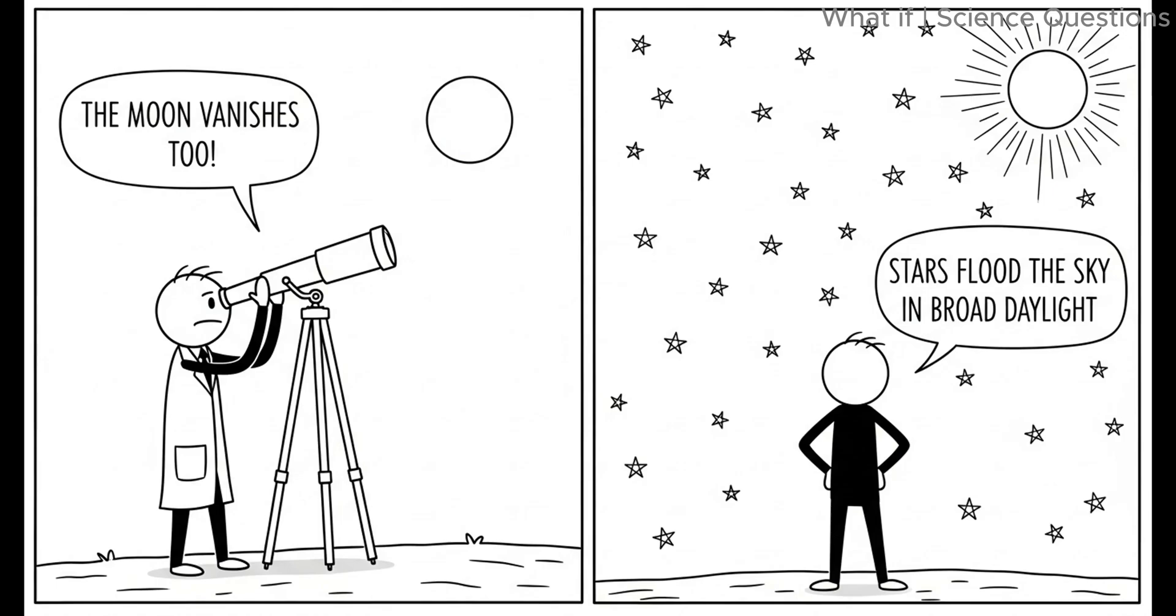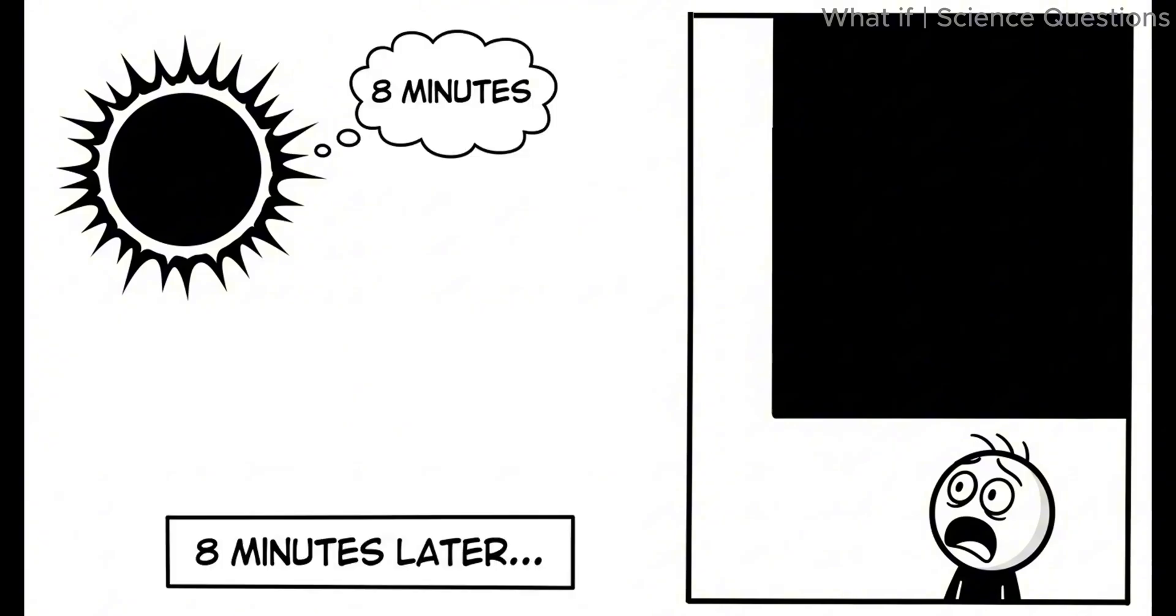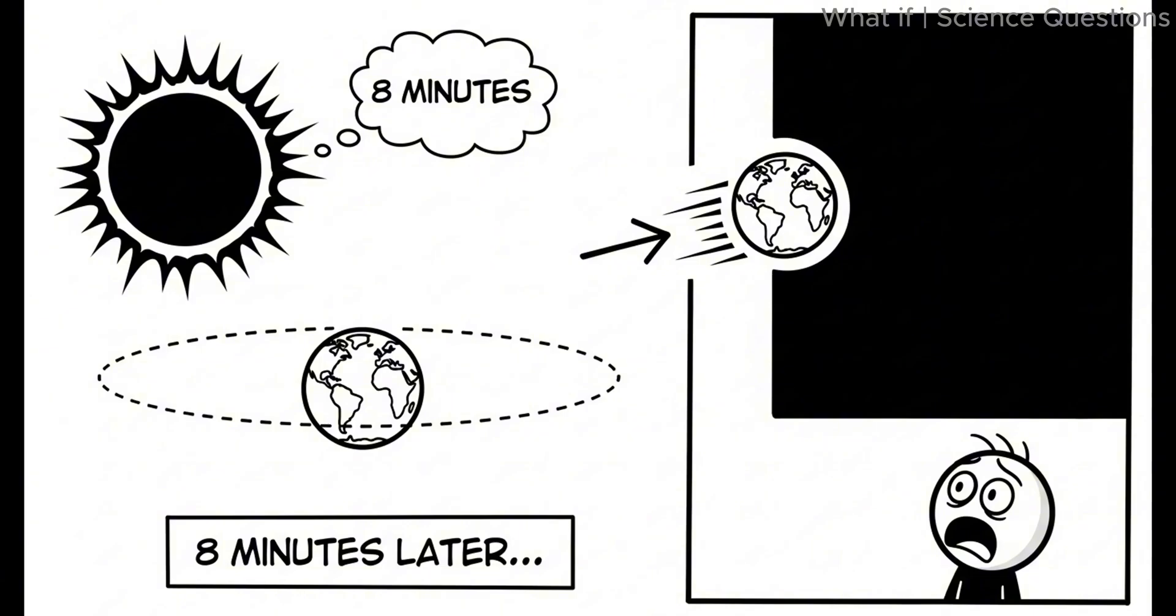Stars flood the sky in broad daylight. And here's a terrifying twist. It's not just light we lose. The sun's gravity also takes eight minutes to stop affecting us, because gravity also travels at the speed of light. Which means, at the exact moment the sun's light disappears, earth is suddenly released from its orbit.